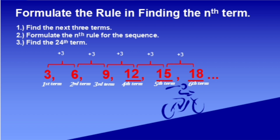To save time and get the 24th term, I want you to take note of this acronym: DNA. D represents the constant difference between the terms, N represents the term number or the position of the number, and A is the first term. In this number sequence, the constant difference is 3, and A, the first term, is 3.